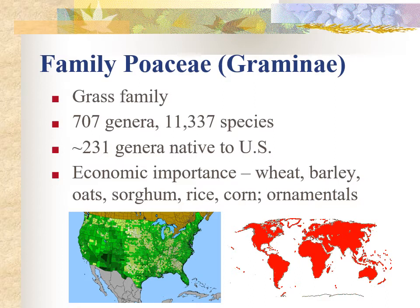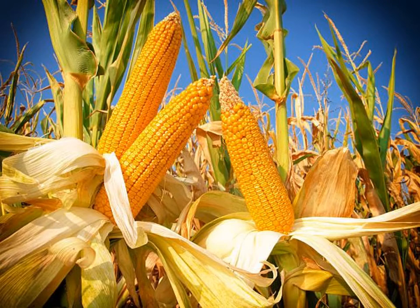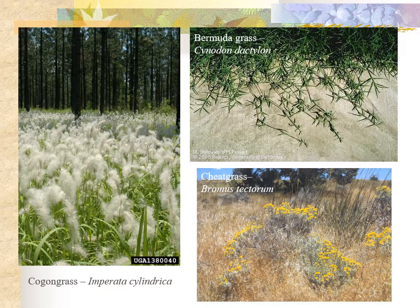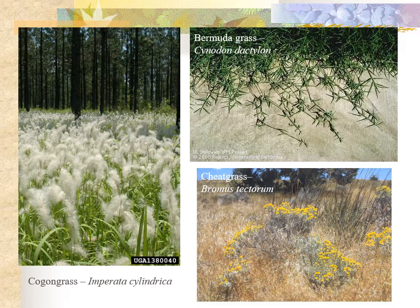Make sure you know the family Poaceae. Corn is a familiar example, and it was actually domesticated from wild grass down in Mexico about 8,700 years ago. An example of an invasive weed in the Poaceae is cheatgrass, or Bromus tectorum, which has absolutely ravaged the landscape of the American West as an invasive plant.